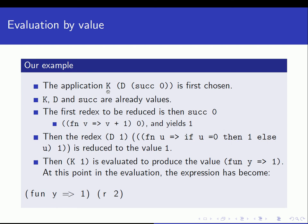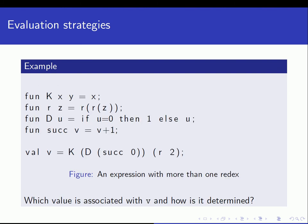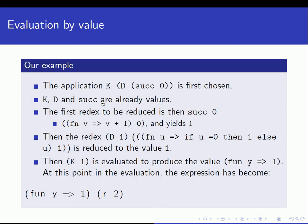So we have k of one left. K of one is evaluated to produce the value: a function that given argument y returns one. Remember, k takes two arguments x and y. If we send only a single argument to it, it gives us back a function that, given an argument y, returns that value. Since we sent one to k, it gives us a function that given argument y will return one.